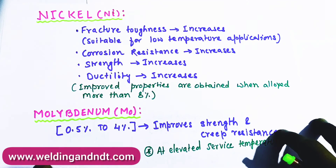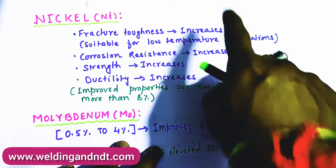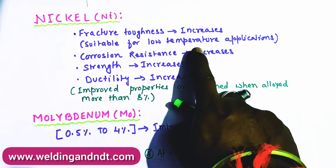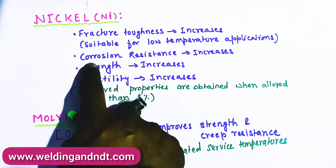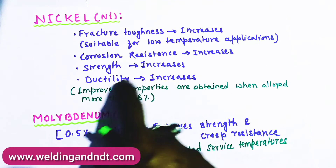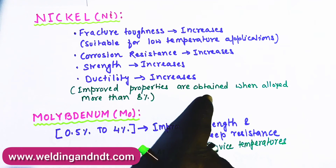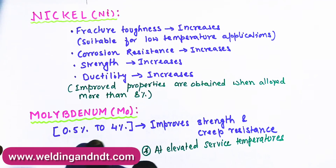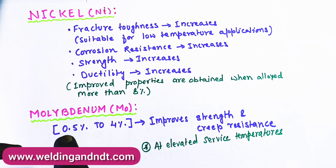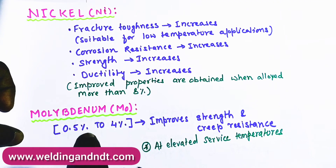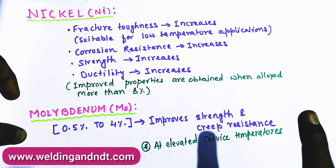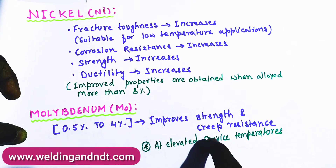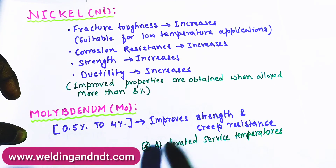With nickel, fracture toughness increases especially at sub-zero temperatures. Corrosion resistance, strength, and ductility also increase. These improved properties are obtained when alloyed with more than 8 percent nickel. For molybdenum, it is present from 0.5 to 4 percent and it improves strength and creep resistance of steel at higher temperature — molybdenum is used for higher temperature service applications.